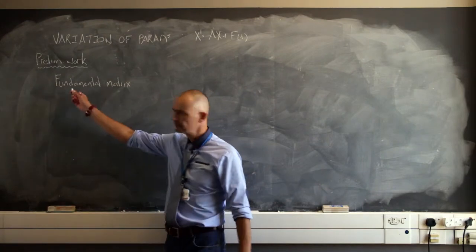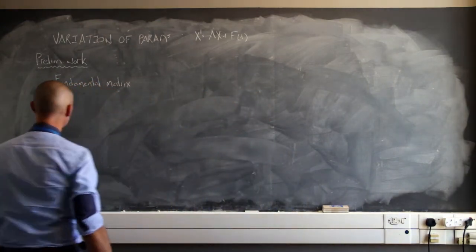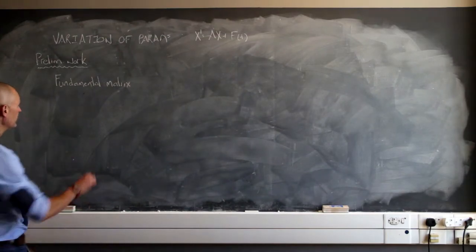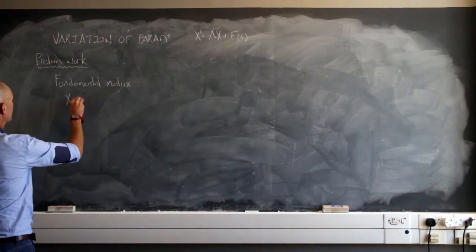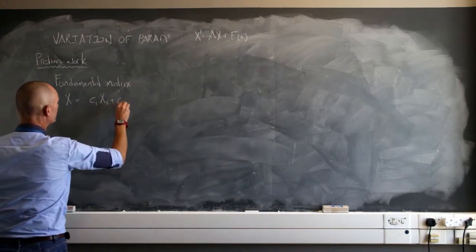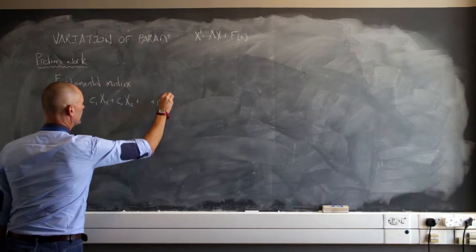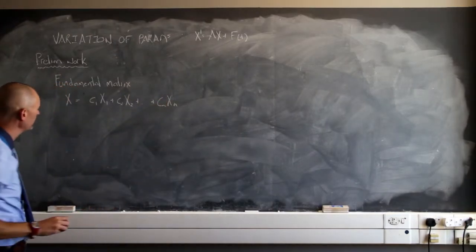Before we can get to an equation for that particular part, we need some preliminary work. And we actually need to determine what's called the fundamental matrix. In order to do that, let's just start with a solution set. Let's say that x equals c sub 1 x sub 1 plus c sub 2 x sub 2 and we go on to c sub n x sub n.